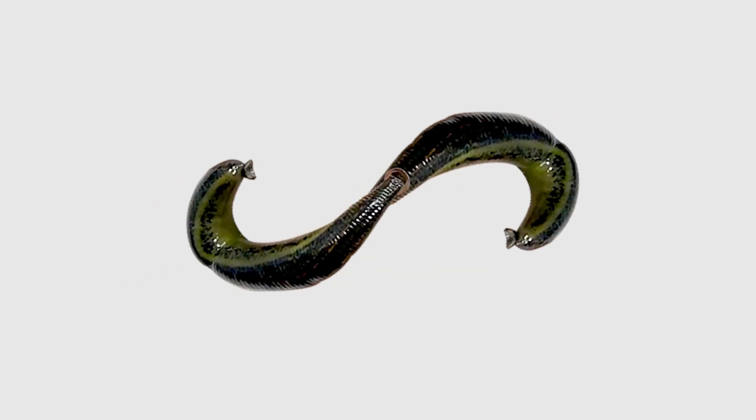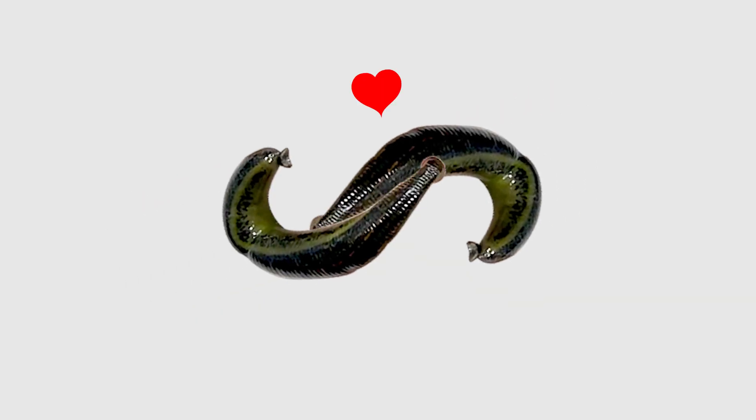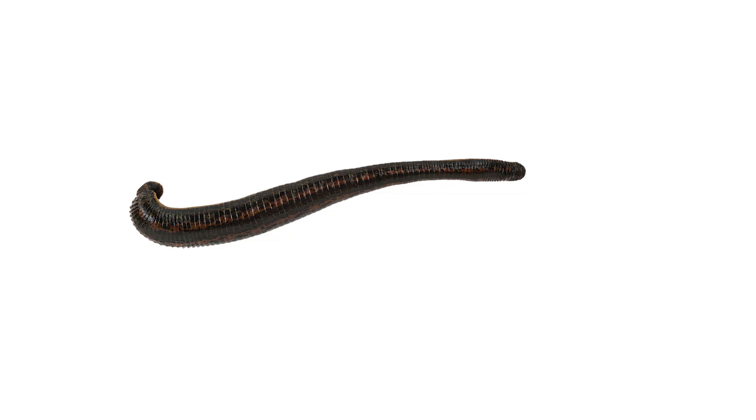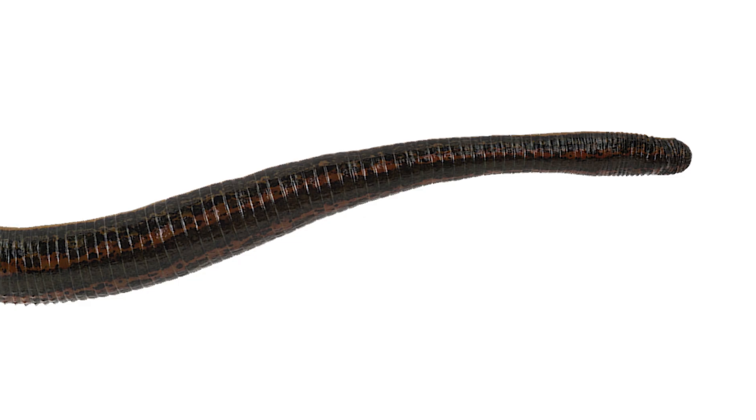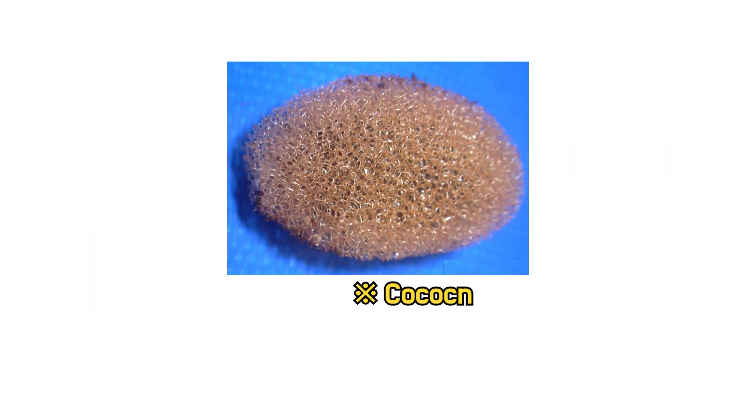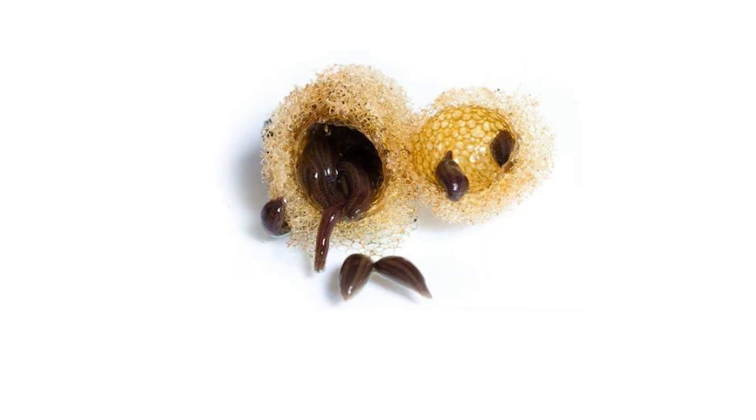They engage in mating by aligning their bodies and injecting sperm into each other. They store the sperm received from another individual, and when the time comes to lay eggs, they internally fertilize and create a cocoon, within which they lay multiple eggs. Larvae are born inside the cocoon.